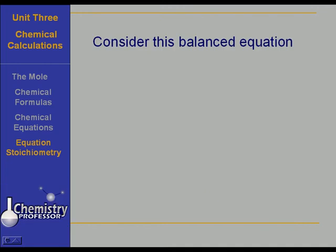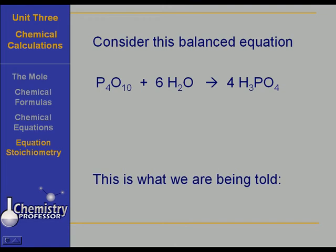Let's consider this balanced equation. Here we have the reaction of tetraphosphorus decoxide, which I will from now on call P4O10, reacting with water to produce phosphoric acid. Let me show you what the equation is telling us. The equation is telling us that one mole of P4O10 will react with six moles of water and in so doing will produce four moles of phosphoric acid, under ideal circumstances of course.